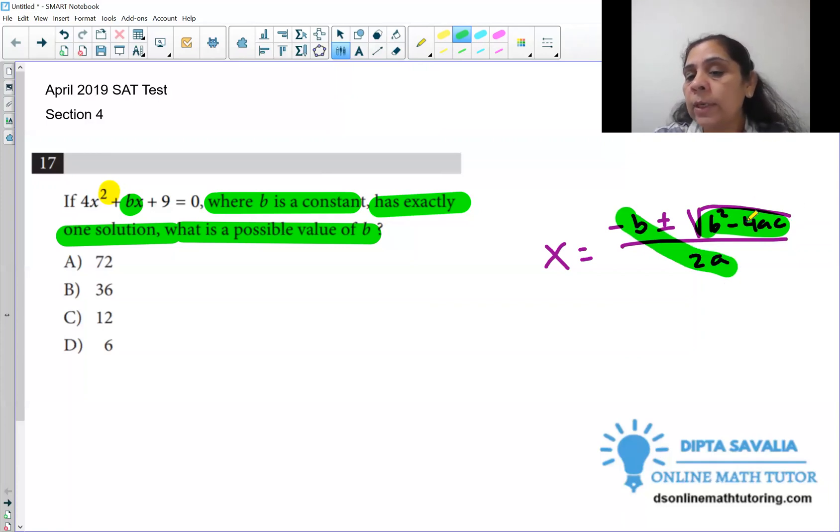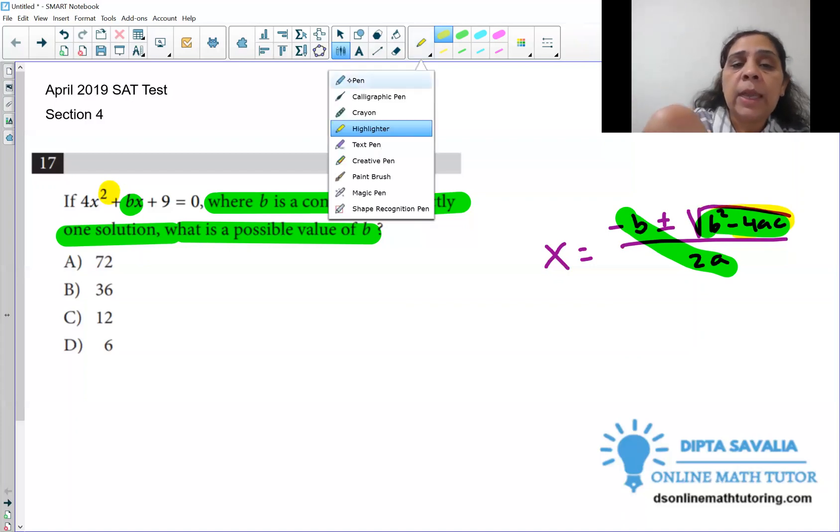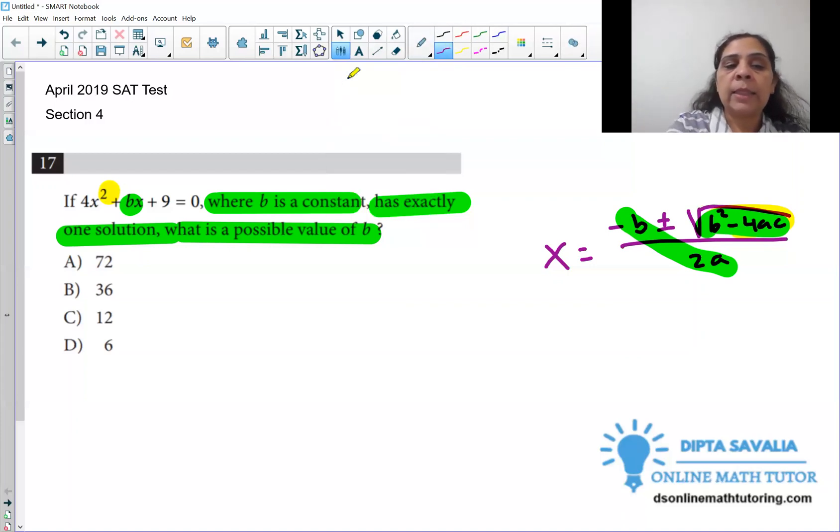If you have positive value, then you will get two real solutions. If you have negative, then there is no real solution, right? Because under square root, we cannot simplify negative number. That's not a real number. So from this, what we can decide - if we have discriminant is zero, then we can say this equation has one solution.